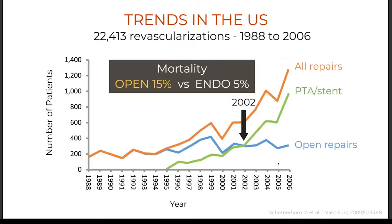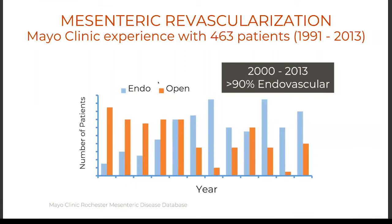I do think endovascular should be the first line of treatment. In the United States, endovascular surpassed open revascularization as the primary method around 2002, largely based on the reality that open revascularization in most centers carries high mortality — on Medicare beneficiaries the average mortality is 15%. At Mayo we observed the same trend around 2002: endovascular has taken off and open has declined, though we continue to do about five to ten open cases a year.